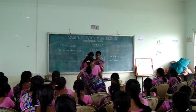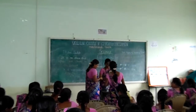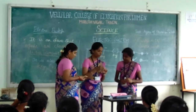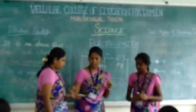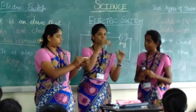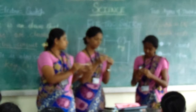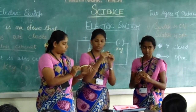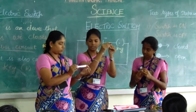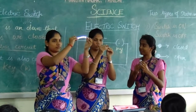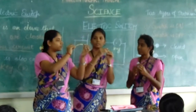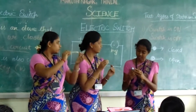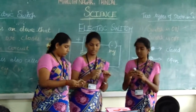Now we are going to see a demonstration. Let us hold the bulb. She is holding the battery, she is holding the bulb, and this is the switch which I am holding. I am going to turn on the switch — see, the bulb will glow. I am going to turn off the switch — it is off. This is representing the switch in the off state and the on state.